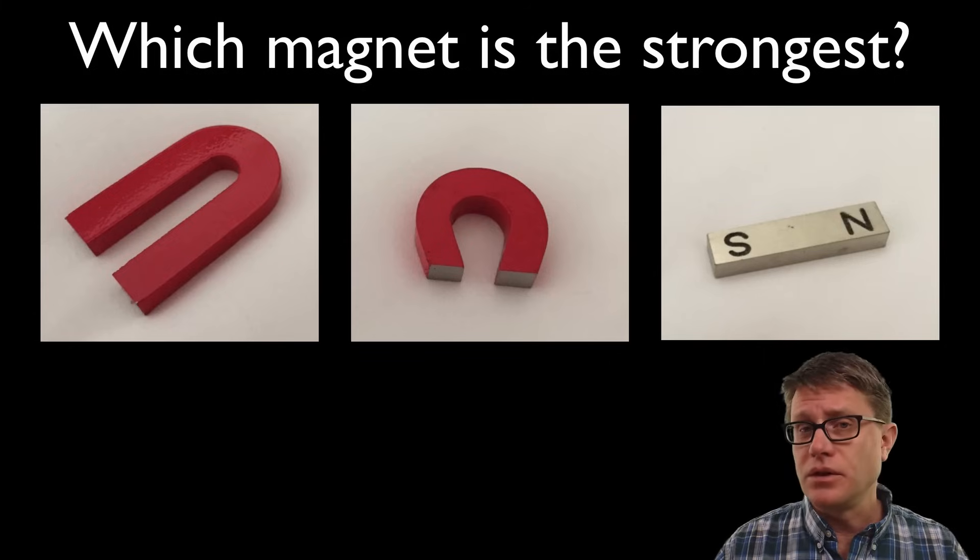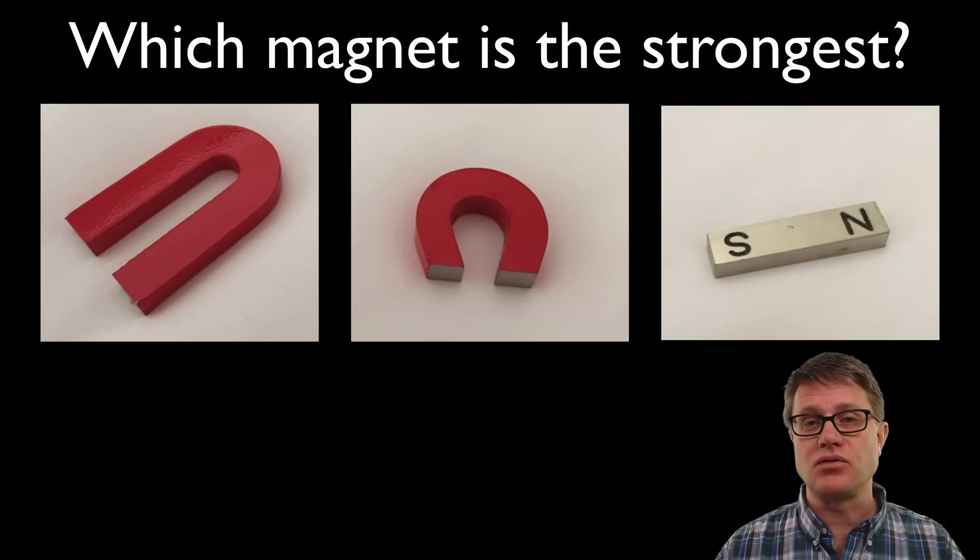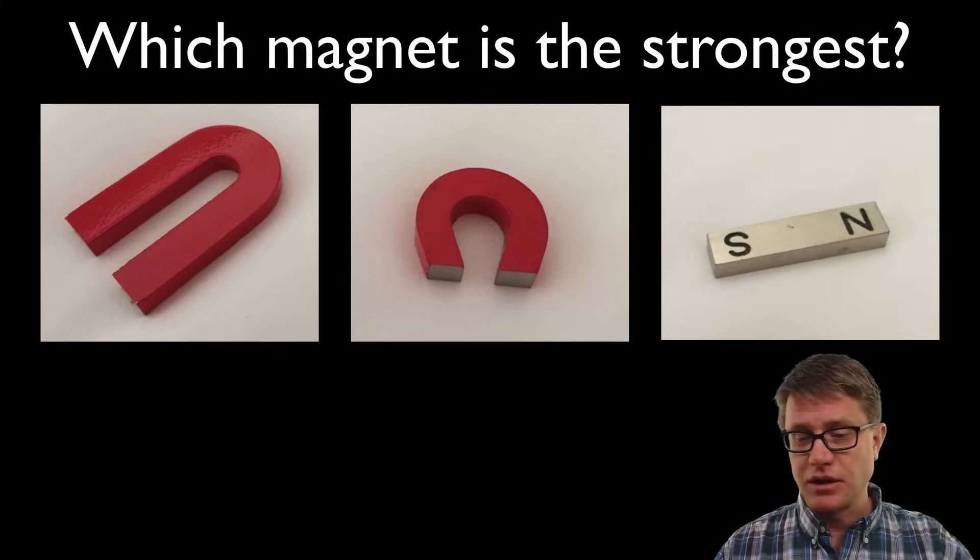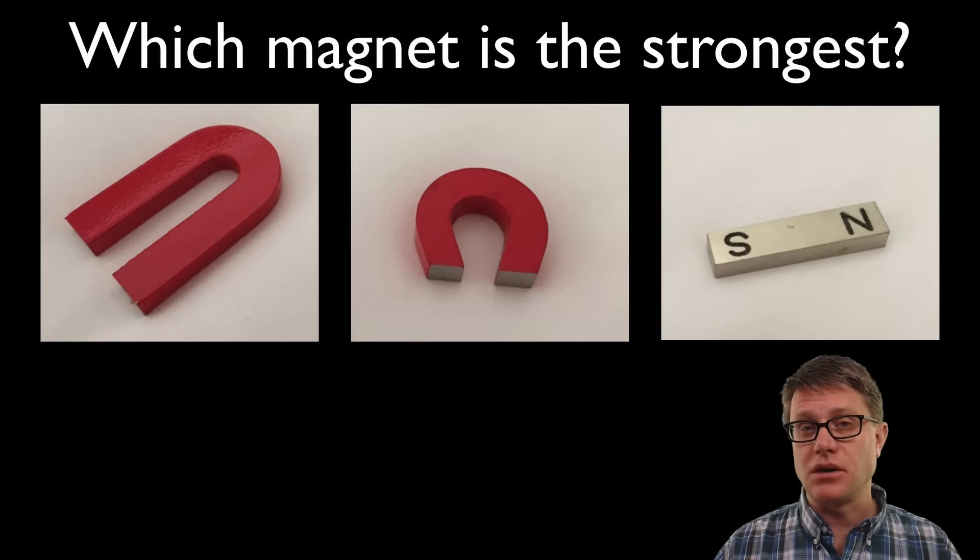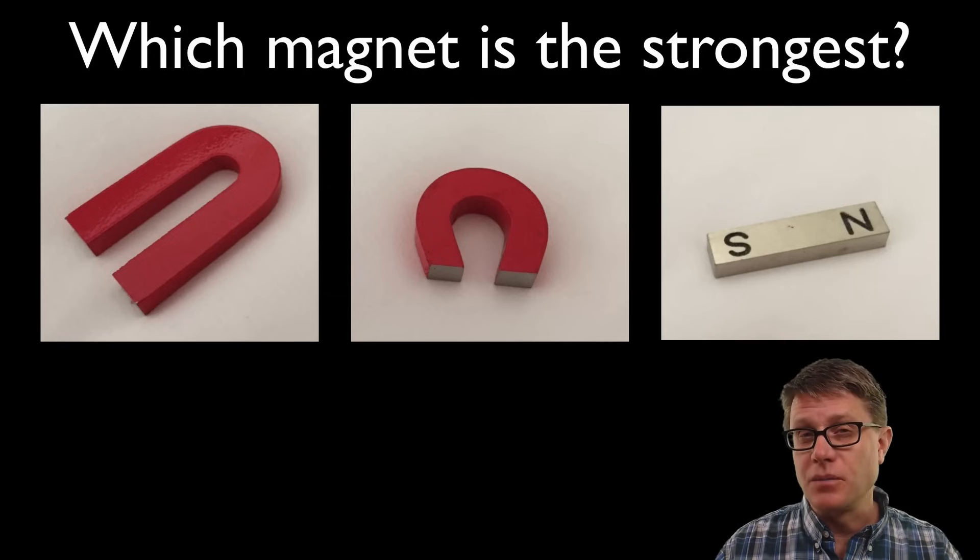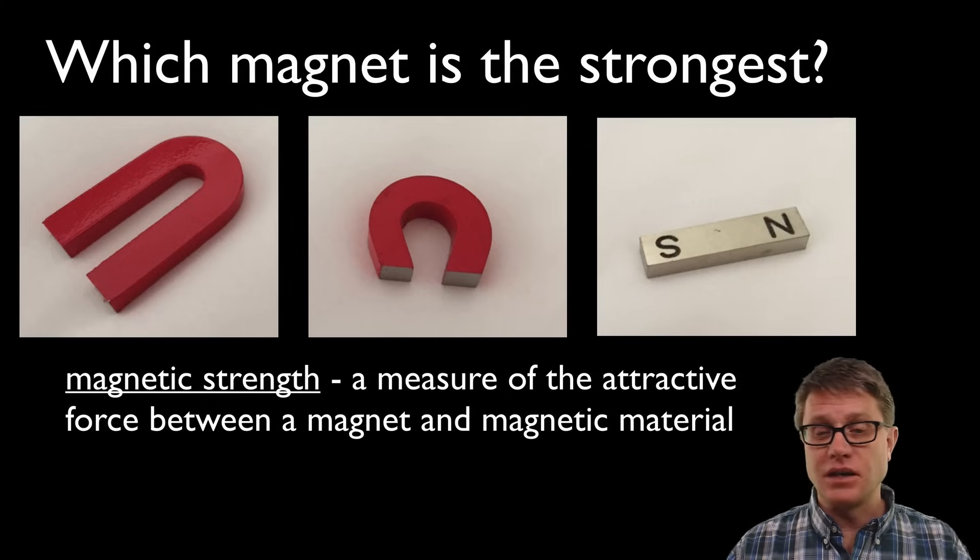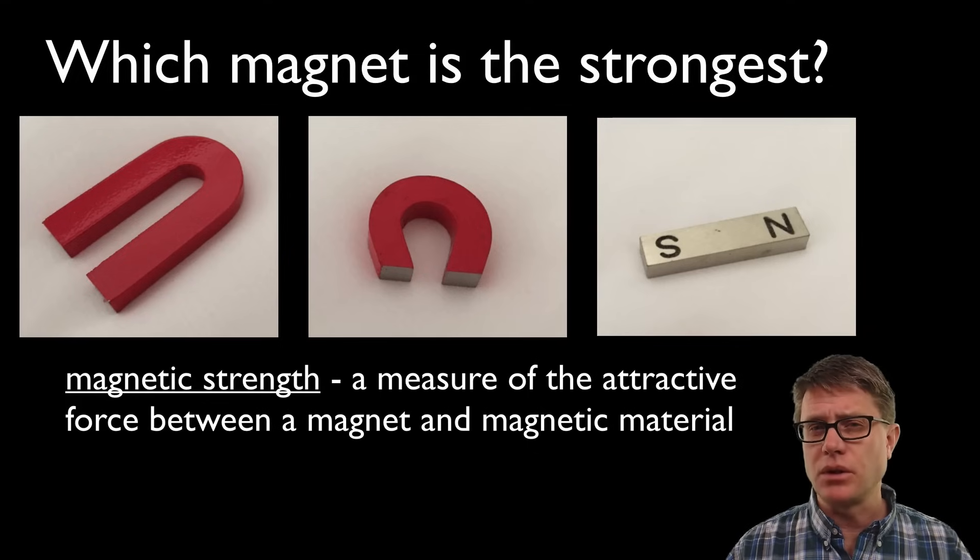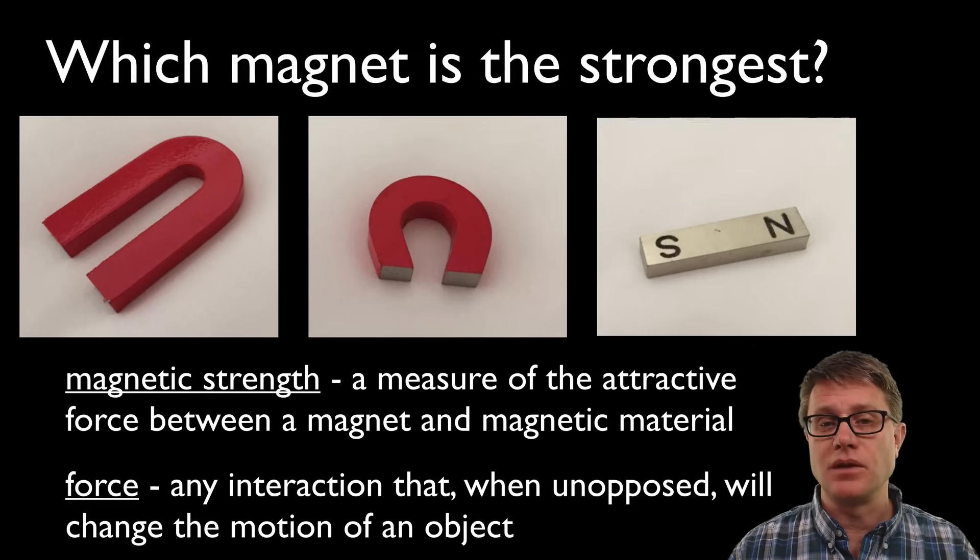Now all you do when you're doing labs that use claim evidence reasoning is just give them a good question and material to answer the question. I could give them a bunch of magnets and I could say which of these is the strongest. Give them a bunch of paperclips, rulers, whatever, rubber bands, washers and they have to answer this question. The first question they should ask you as a teacher however is let's make sure we frame the question and define everything inside it. What is magnetic strength? And if we say it's a measure of the attractiveness or attractive force between a magnet and magnetic material do we know what a force is? Once we have all of these definitions out there it's easier for you to do a claim evidence reasoning.